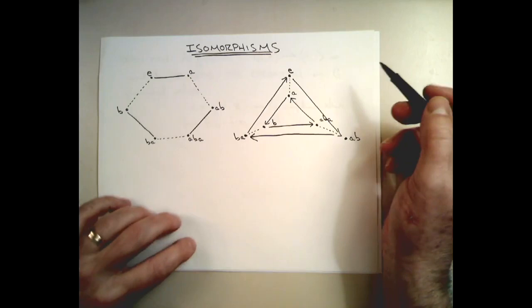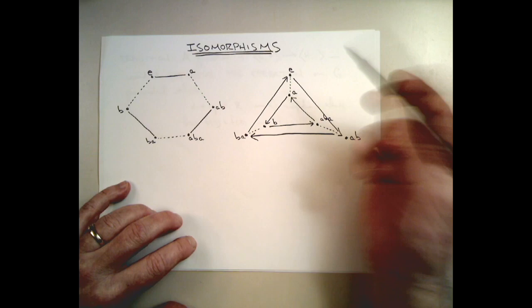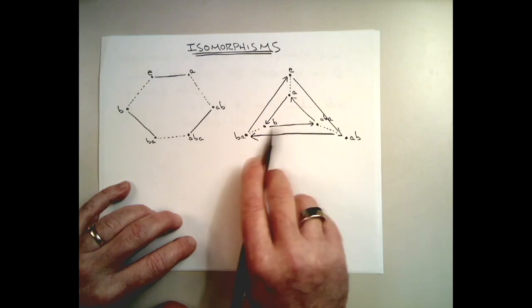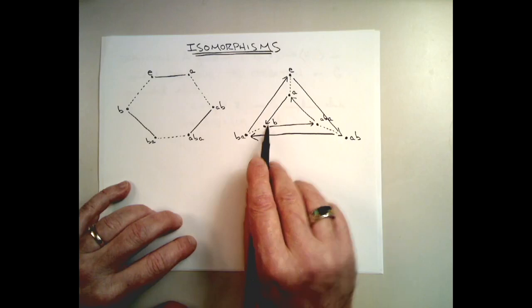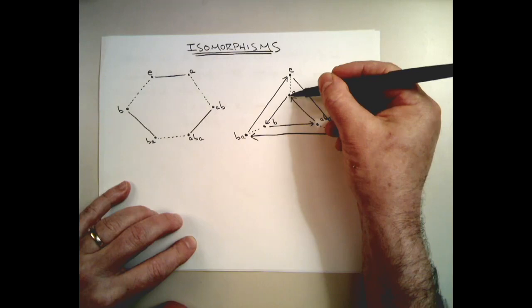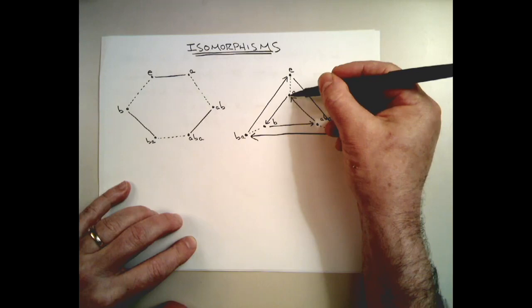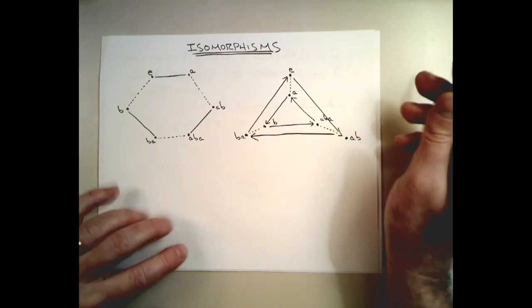We could do a couple of checks just to make sure that this assignment actually works. Let's see: if I start at B and follow it by a solid arrow — solid arrow means AB — so B followed by a solid arrow gives BAB over here. BAB is ABA. And B then AB solid arrow over here is indeed ABA. So that works. Let's see if I did A followed by AB: A followed by AB, I get B. And is that true over here? A followed by AB — here's A followed by AB, I get B. Looks like we're in good shape.